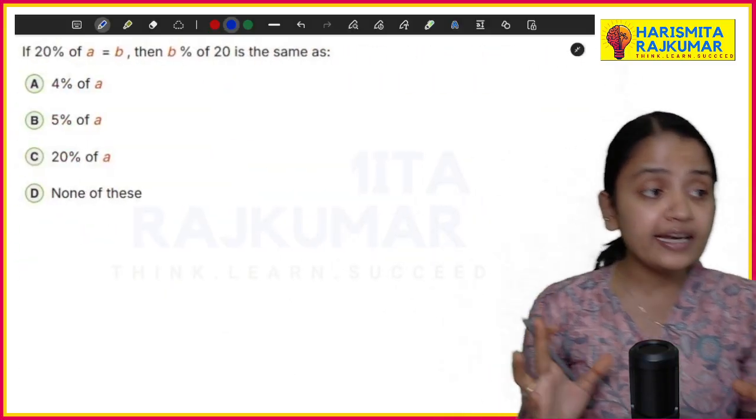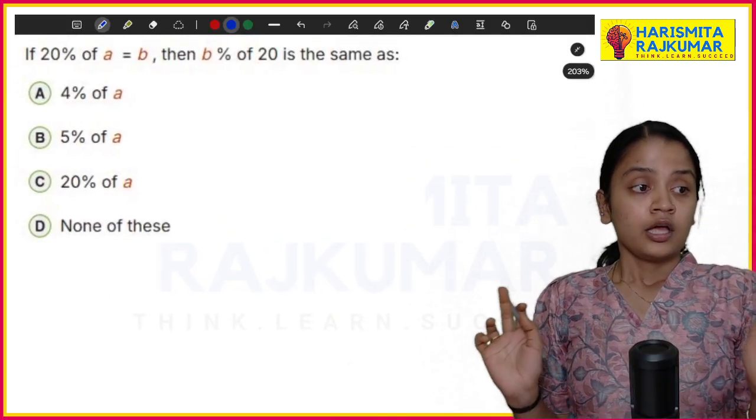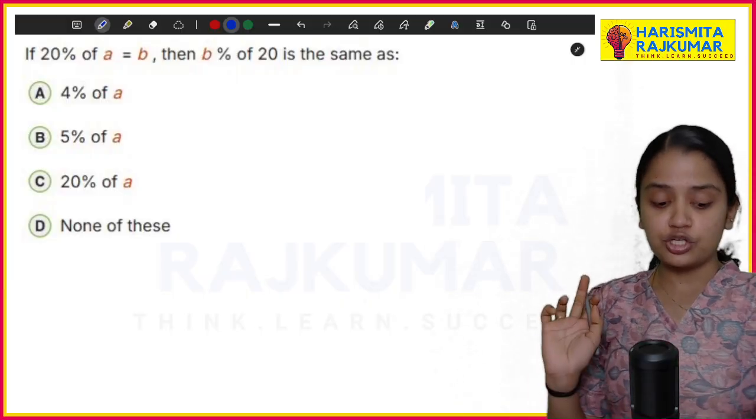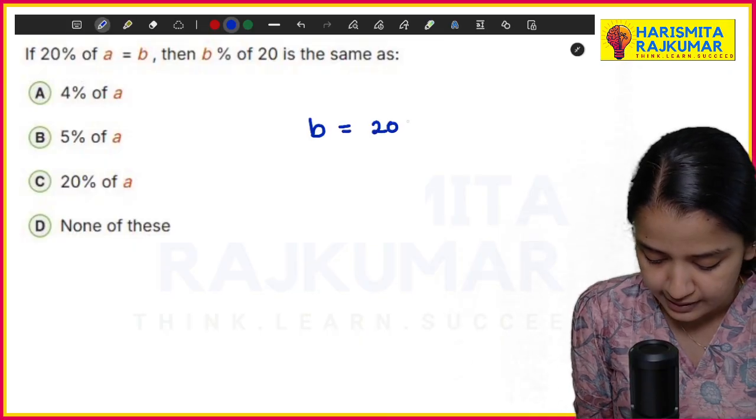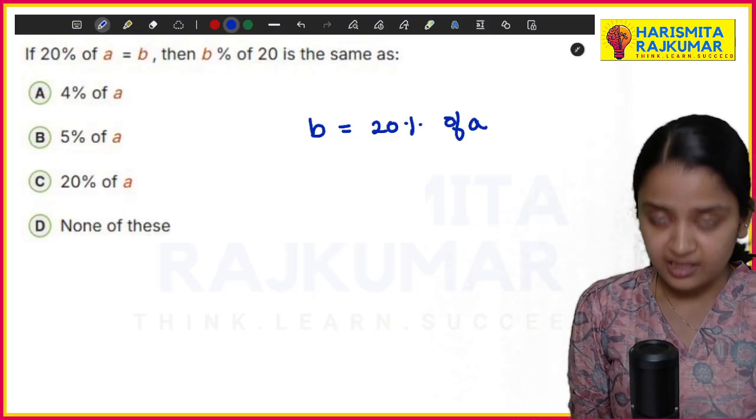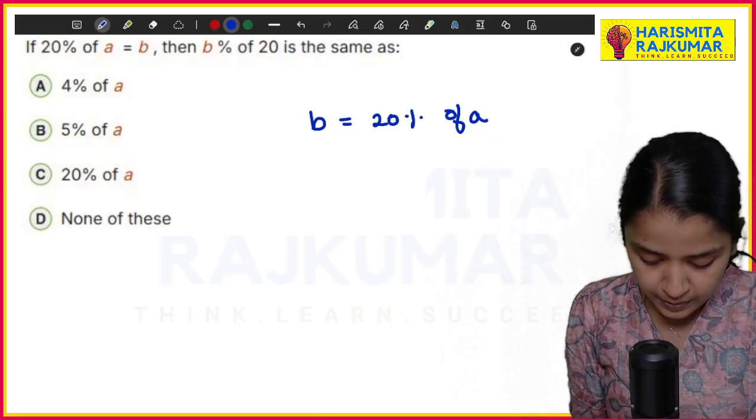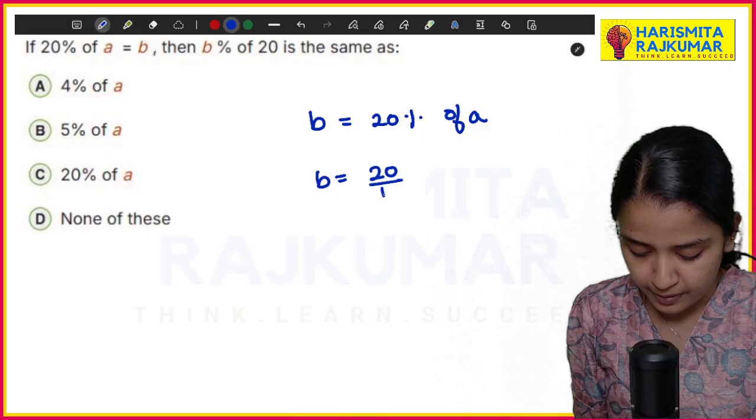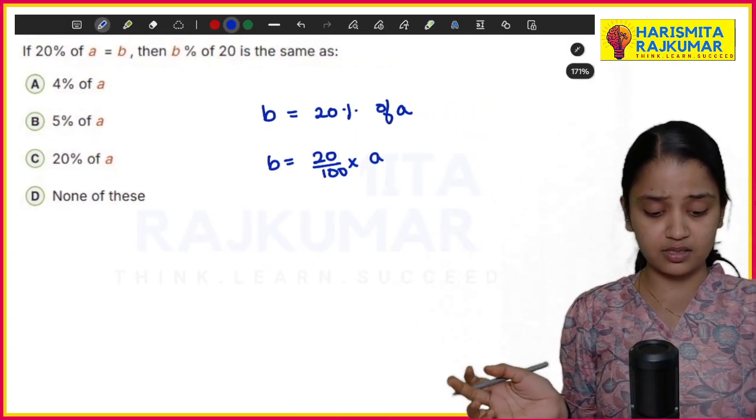If 20% of a = b, so let us assume b = 20% of a, which is nothing but 20/100 × a.